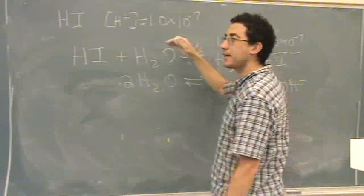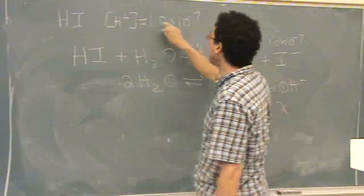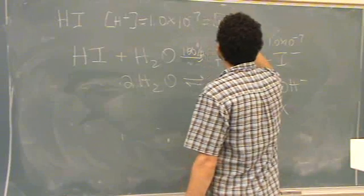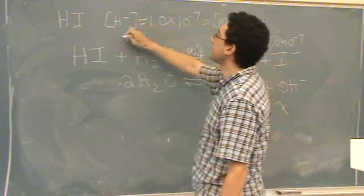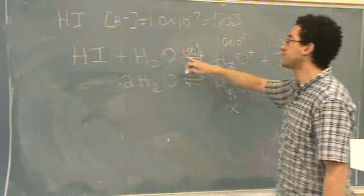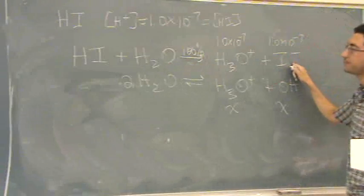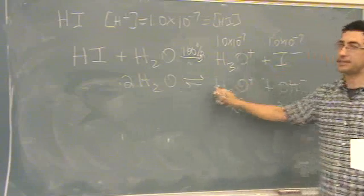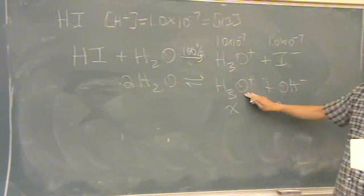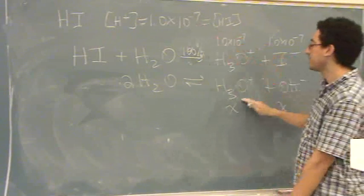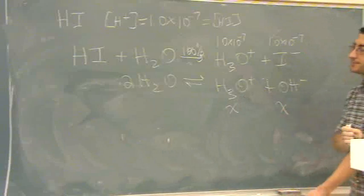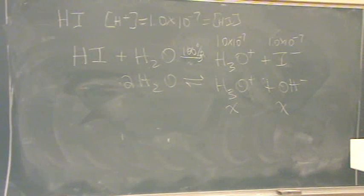Really, I think how I would have worded the problem is this is the HI concentration. If that's the HI concentration, it's also the H plus concentration for this reaction. However, you're also having a Kw reaction that will contribute a significant amount because this is so tiny, the H3O plus.